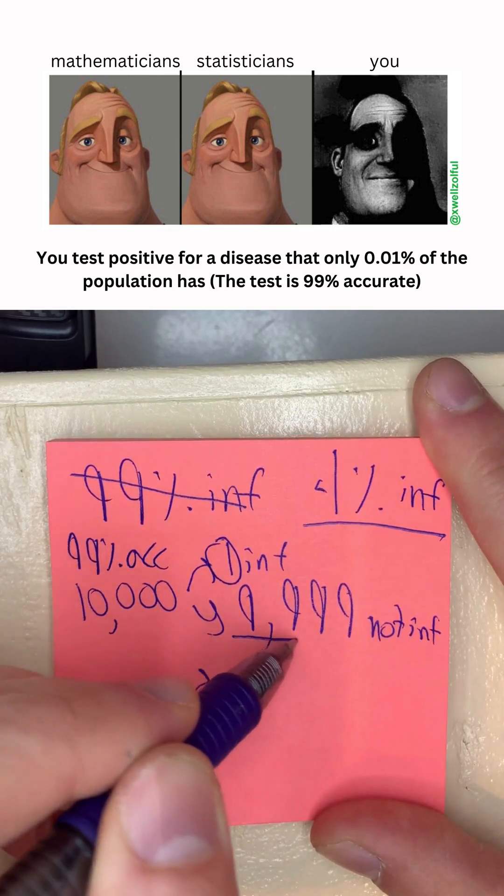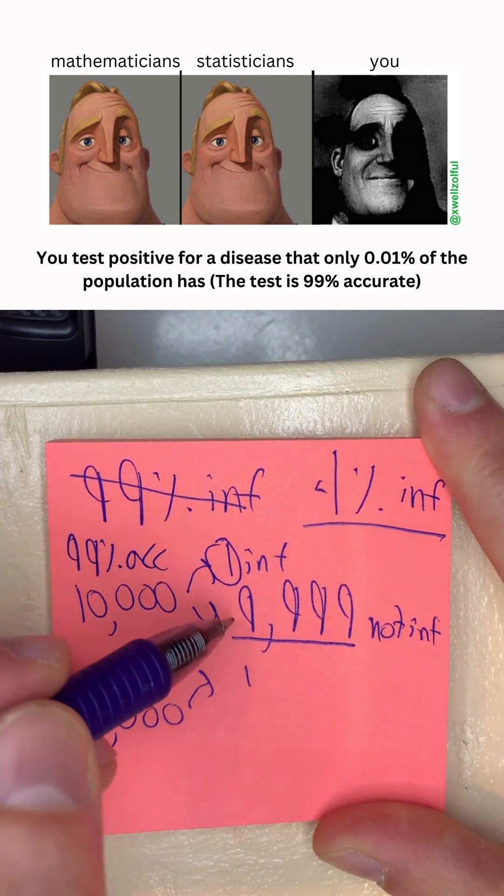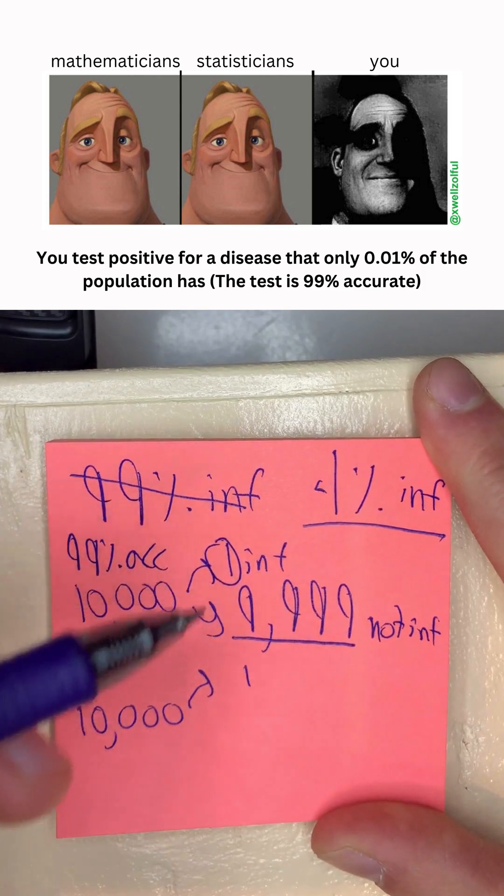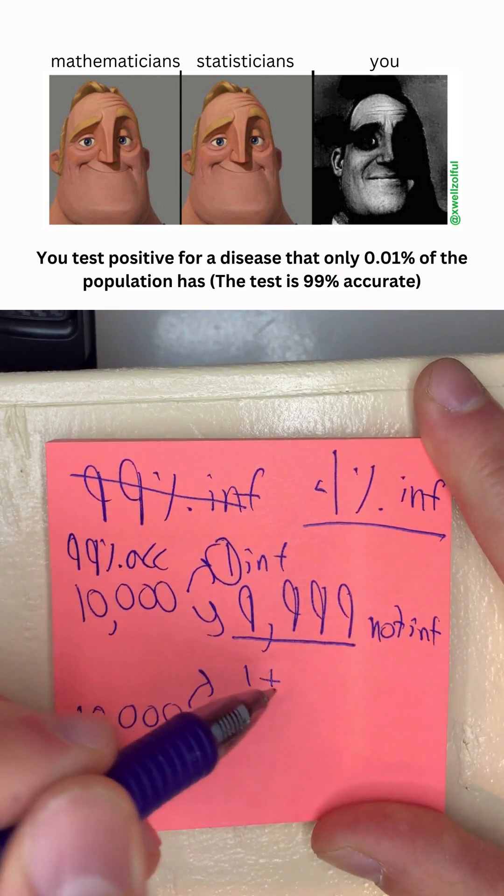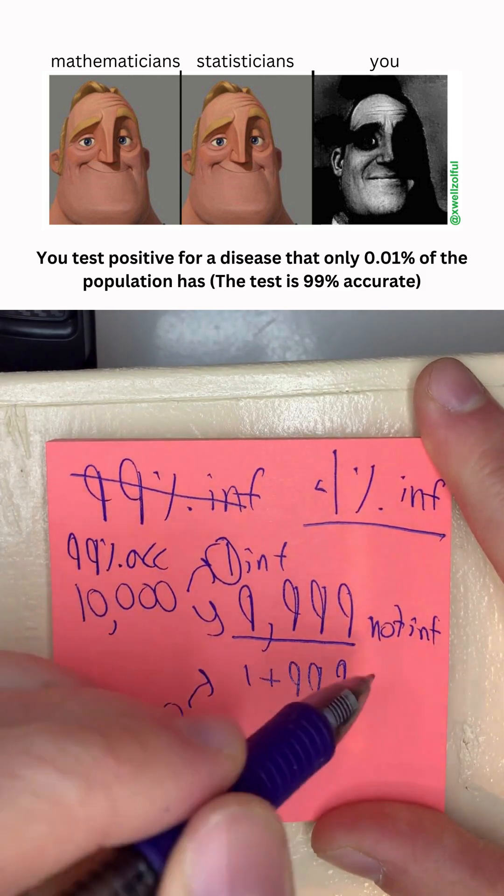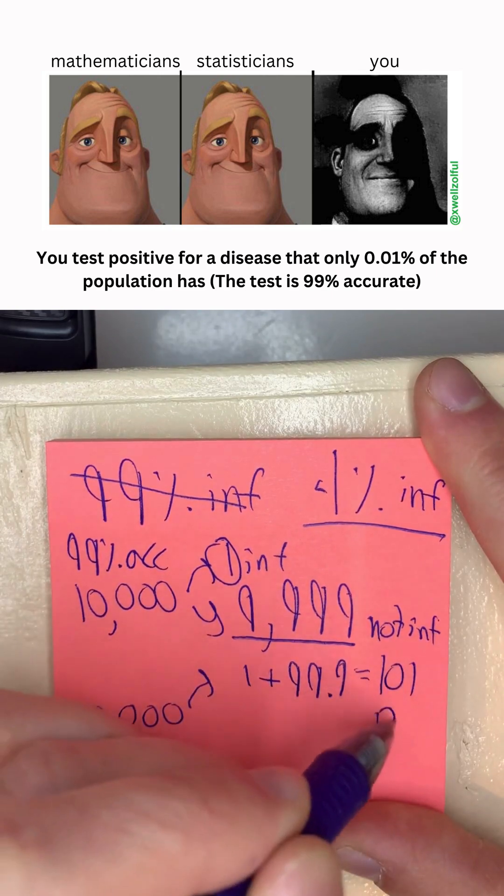But we're also going to have a lot of false positives. 1% of these people are going to test positive when in reality they're not. So we're going to have 99.9 people, we'll just call it 101 people test positive.